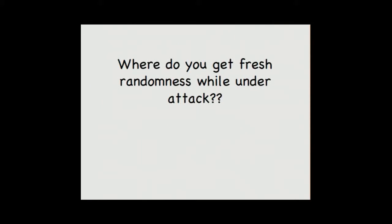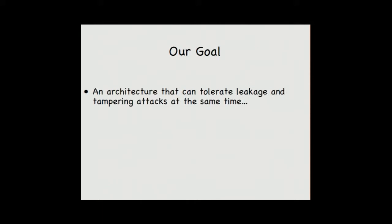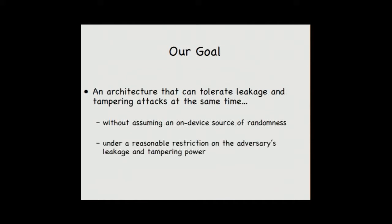However, where do we get randomness while under attack? And as the previous talk also motivated, randomness can be a very precious resource. So we do not want randomness in this setting. Our goal is an architecture that can tolerate both attacks at the same time without assuming on-device randomness. However, this is impossible. We cannot set a goal that contradicts our previous result, so we need a reasonable restriction on the adversaries' leakage and tampering power.